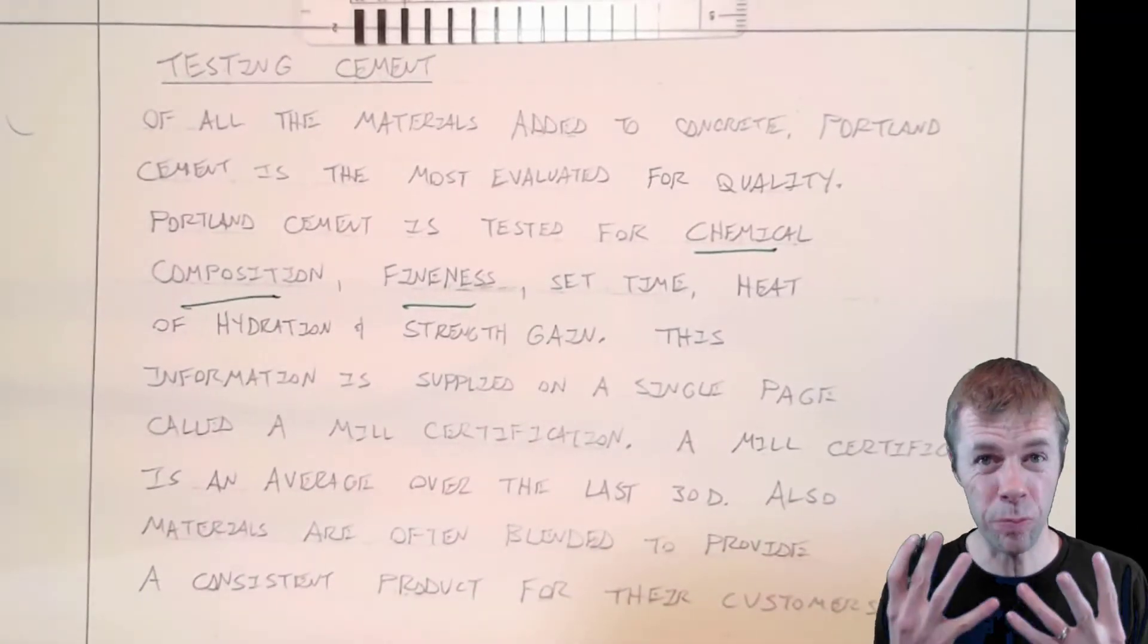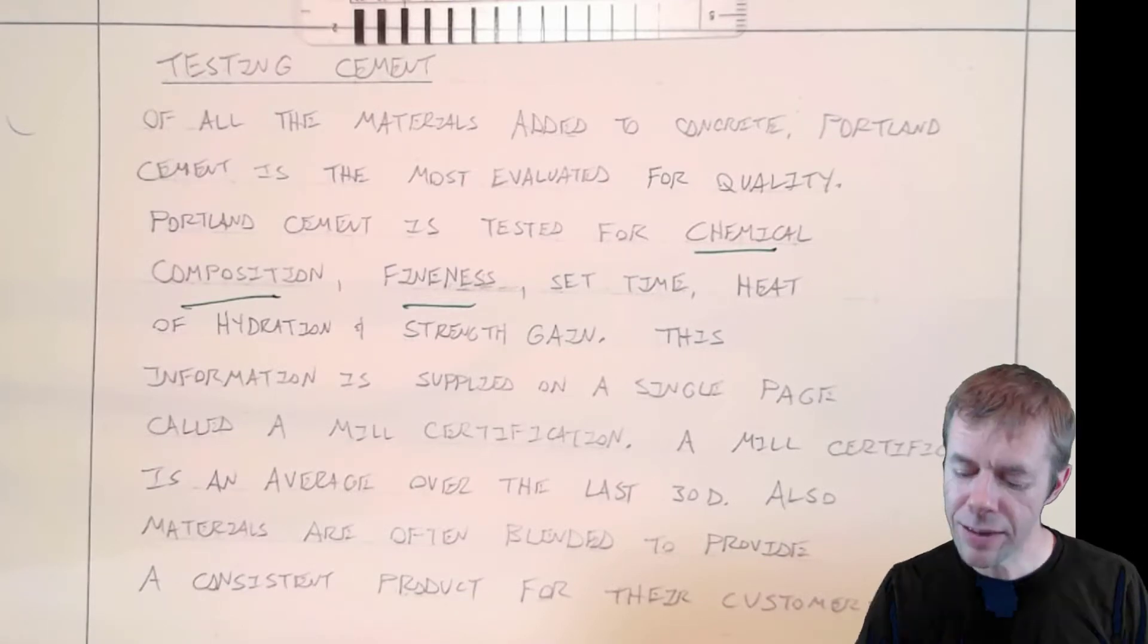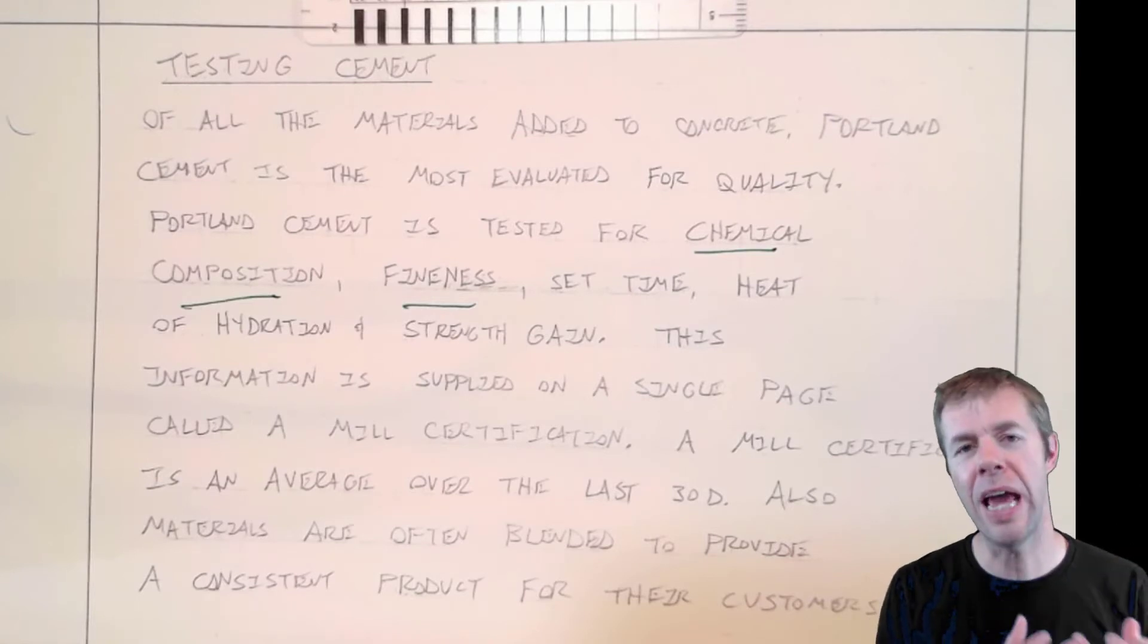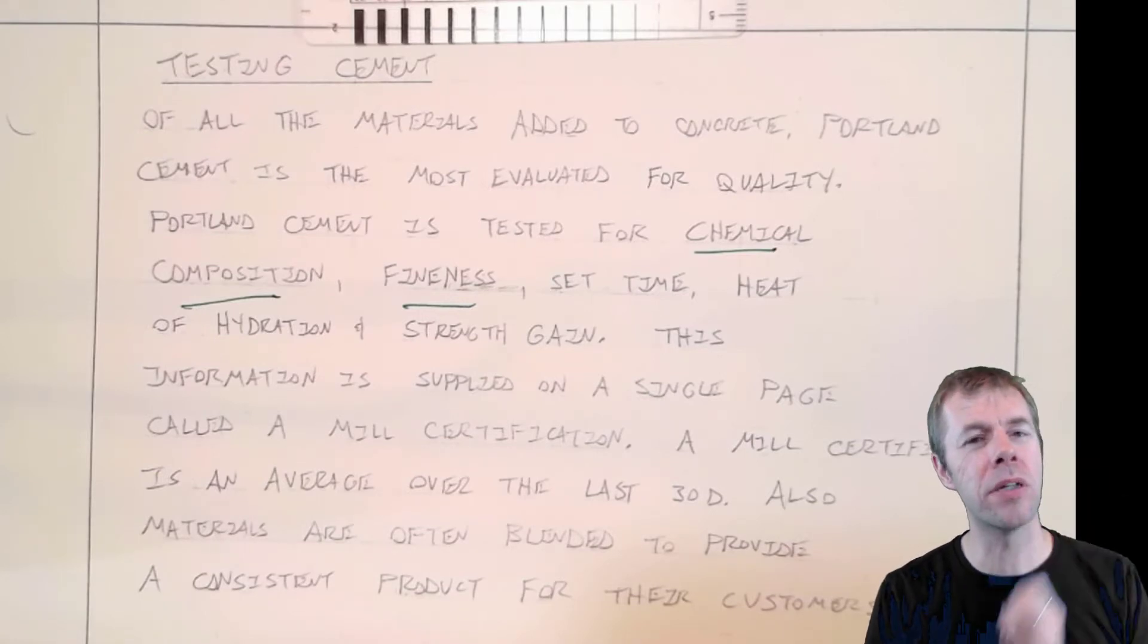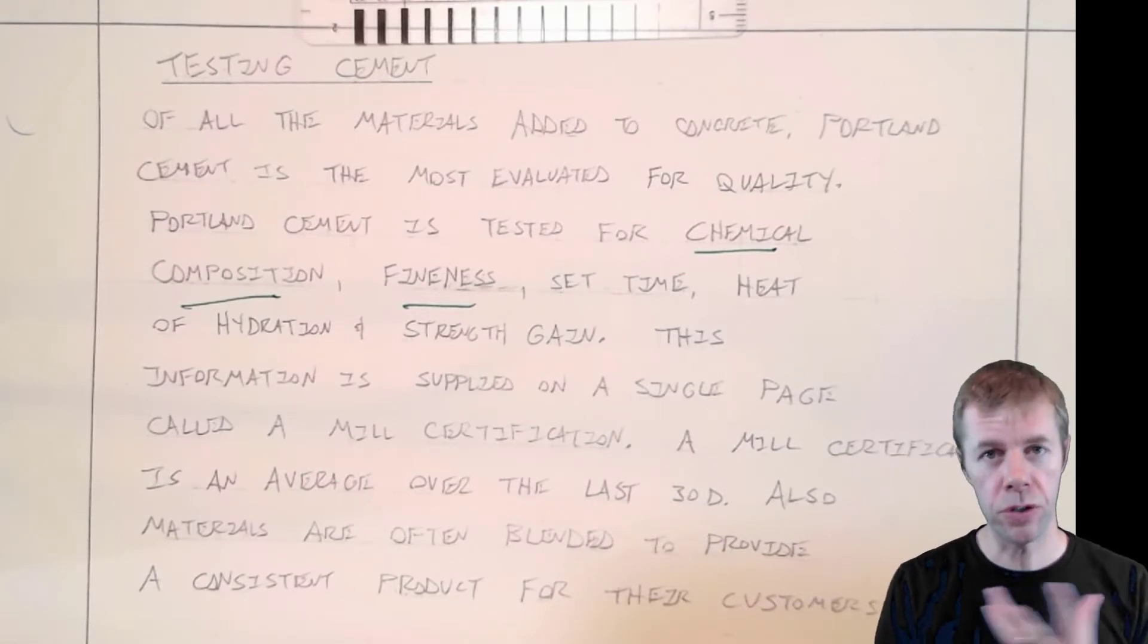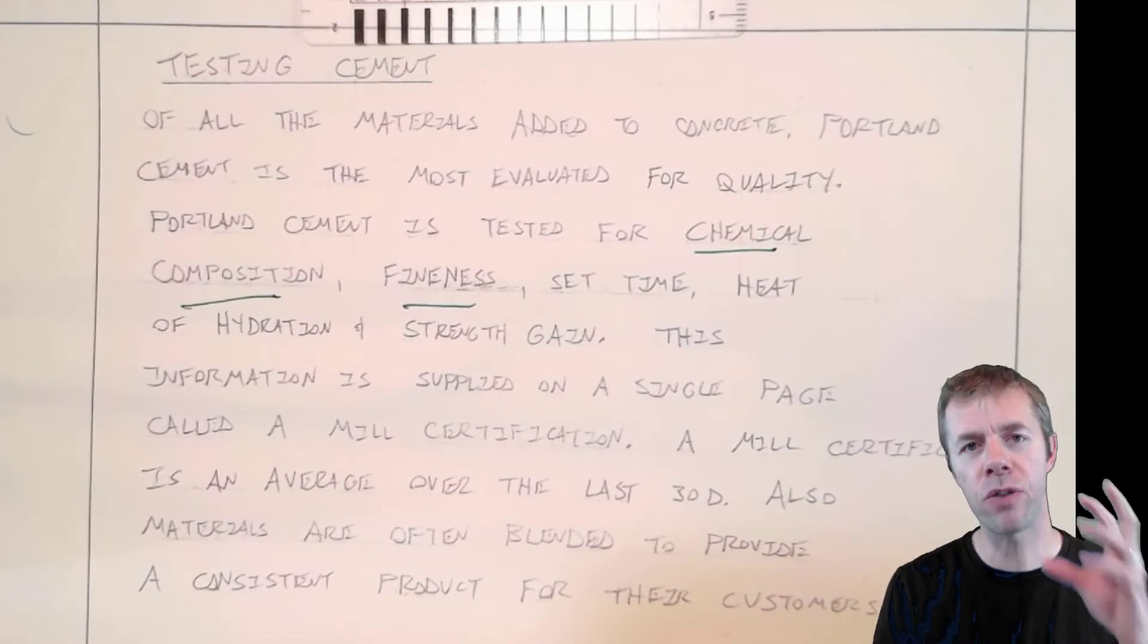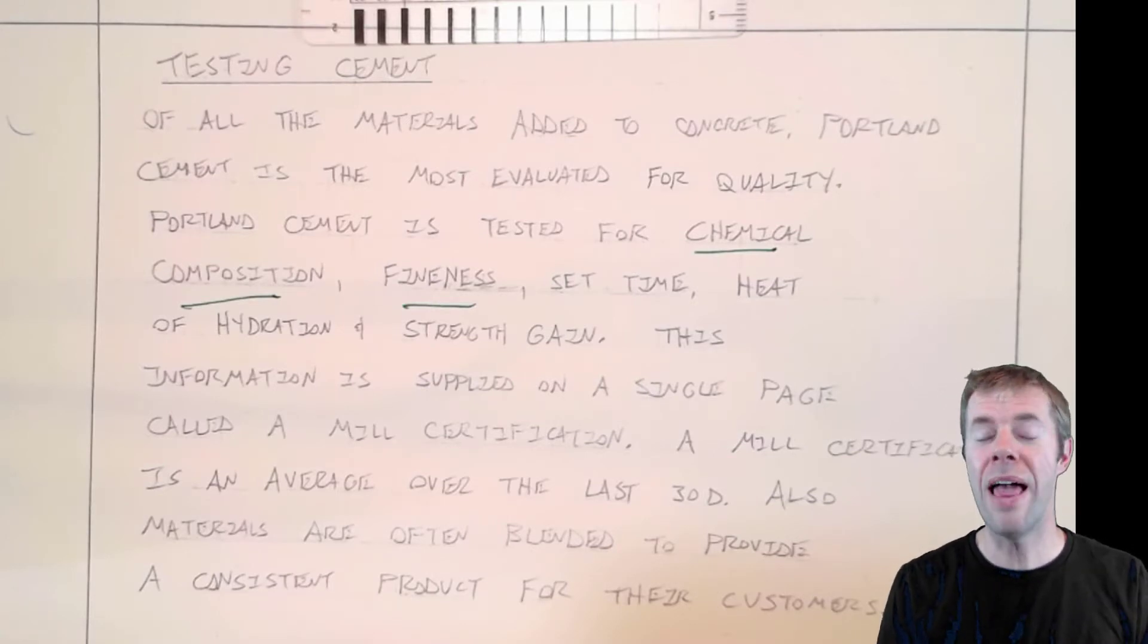This information is supplied on a single piece of paper called a mill certification or mill cert. It's an average over the last 30 days, so be careful. The material you get that day may be a little bit different than what the mill certification says. Also remember that they blend different materials to help produce an average quality material out of a certain plant. Uniformity in our materials is exactly what we want.